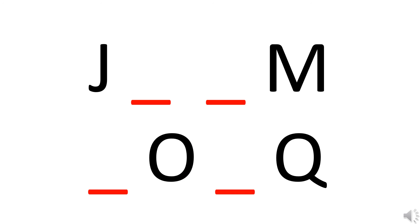Okay children, in our next exercise we have letter J and after letter J we have a blank. So what will come after J? Yes, letter K. K will come after J. So we will write letter K.